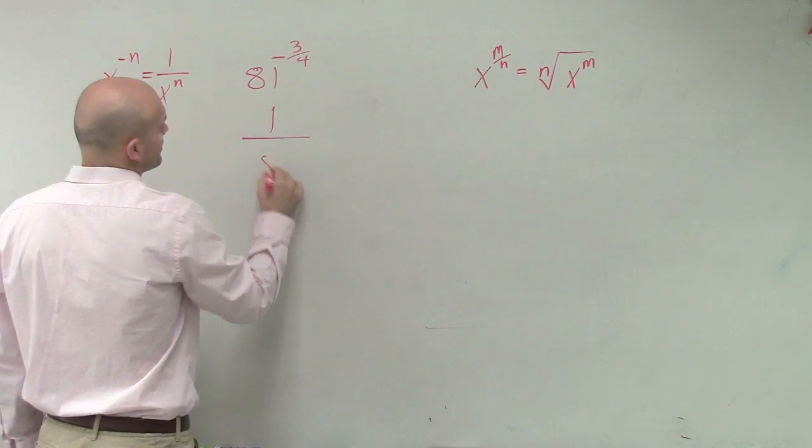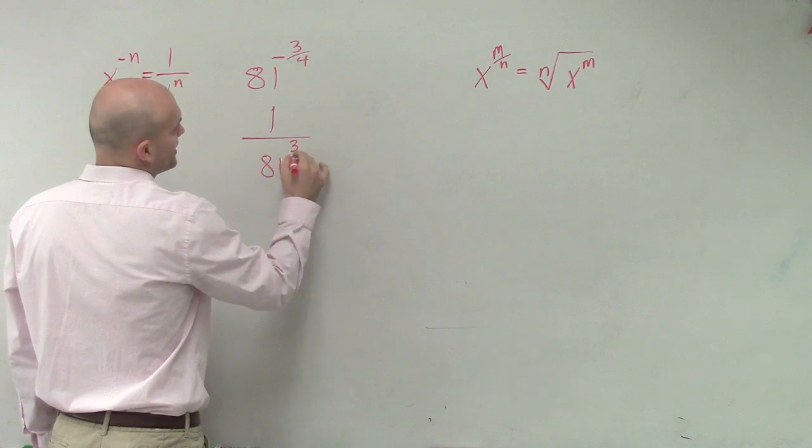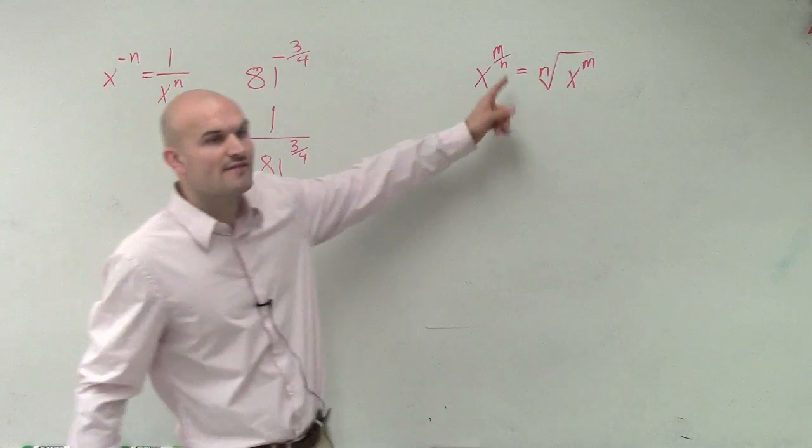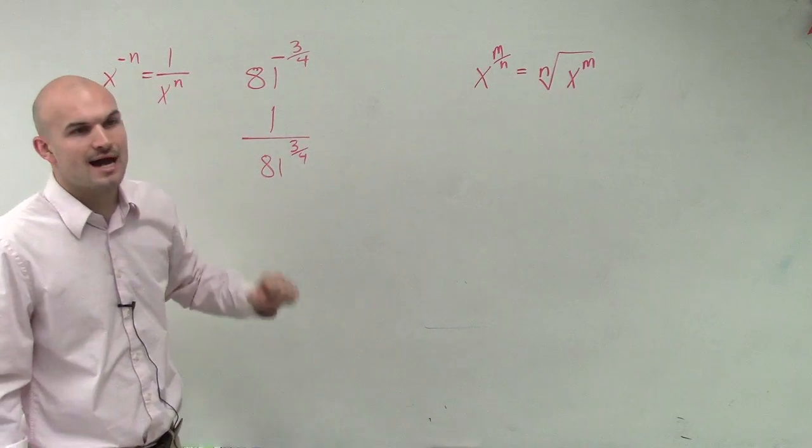1 over 81 to the 3 over 4. So now we still have our m to the n. Now it's just in the denominator.